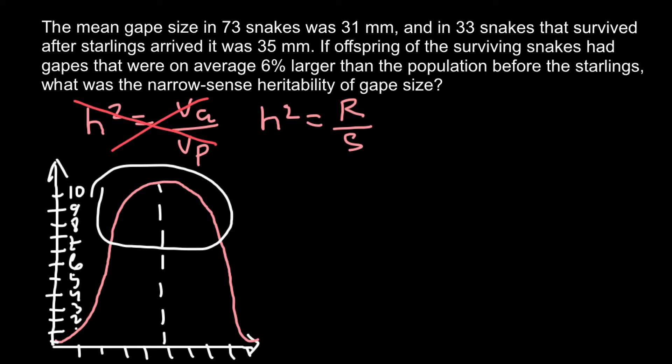So let's imagine that this curve totals to 73 snakes. And as you see, most of them would be, say, if average is 31 millimeter, 31 here. And let's say this is distributed between 26 and 36. So 31 would be in the middle.